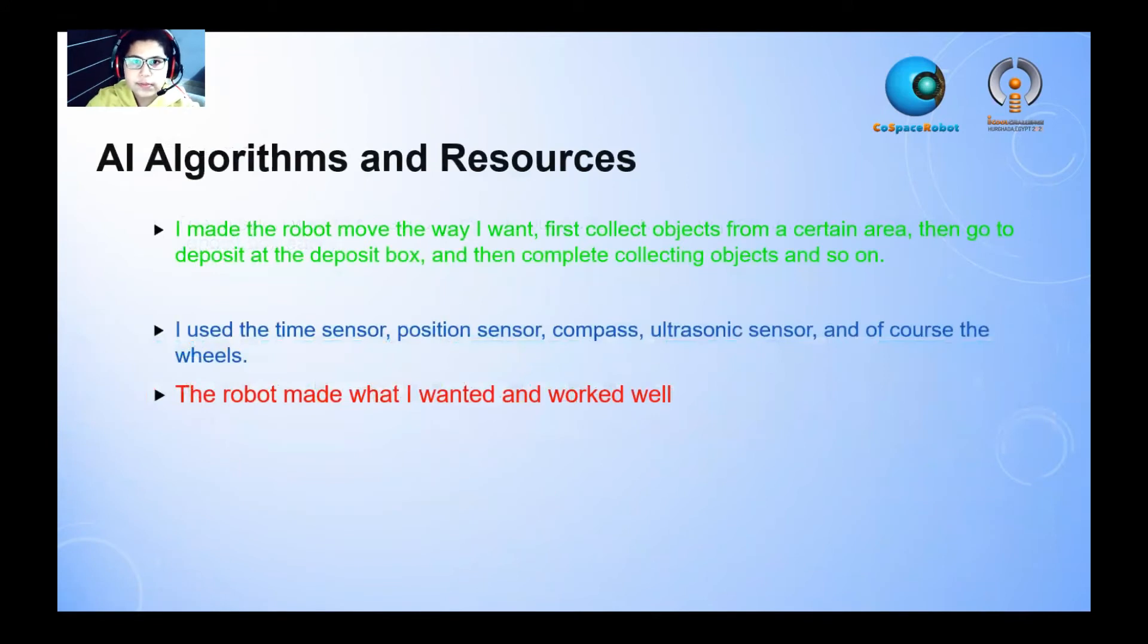Algorithms and resources. I made the robot move the way I wanted. First to collect objects from a certain area, then go to deposit at the deposit box and then complete collecting objects and so on. The same loop.